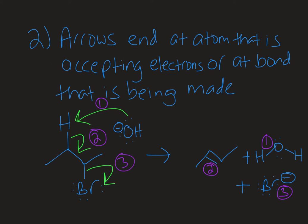So all of the arrows here begin at electrons. And all of the arrows end either at an atom that's accepting electrons, or they indicate the formation of a new bond.